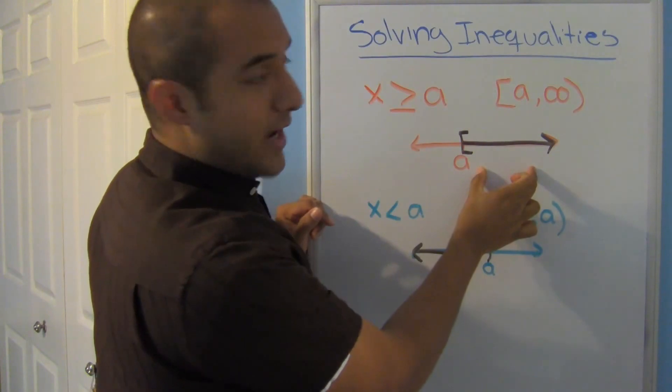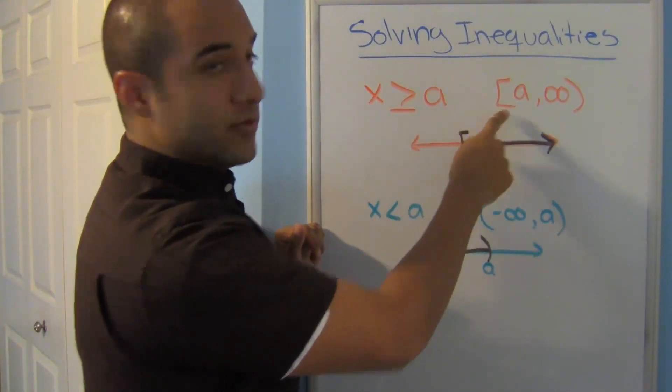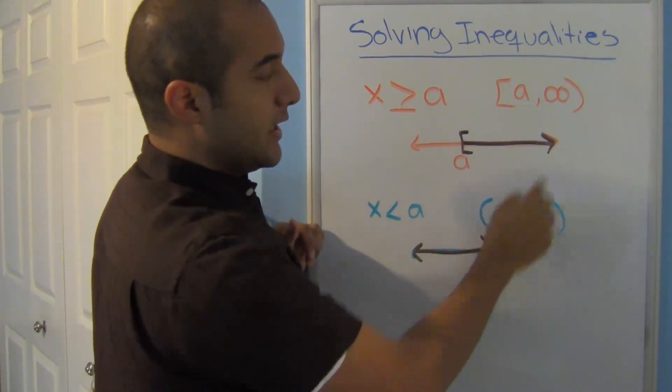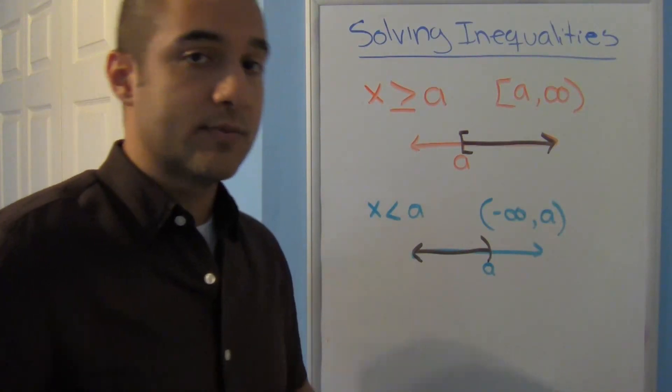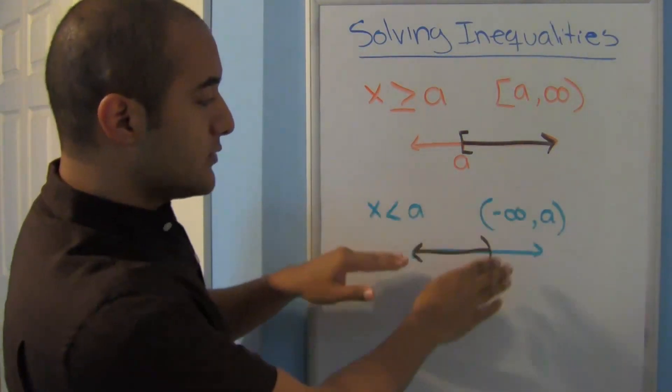going to match. As a graph, notice that I have an equal to, so on my a I use the bracket. On my infinity signs though, notice that I use a parentheses. You always use parentheses for infinities.